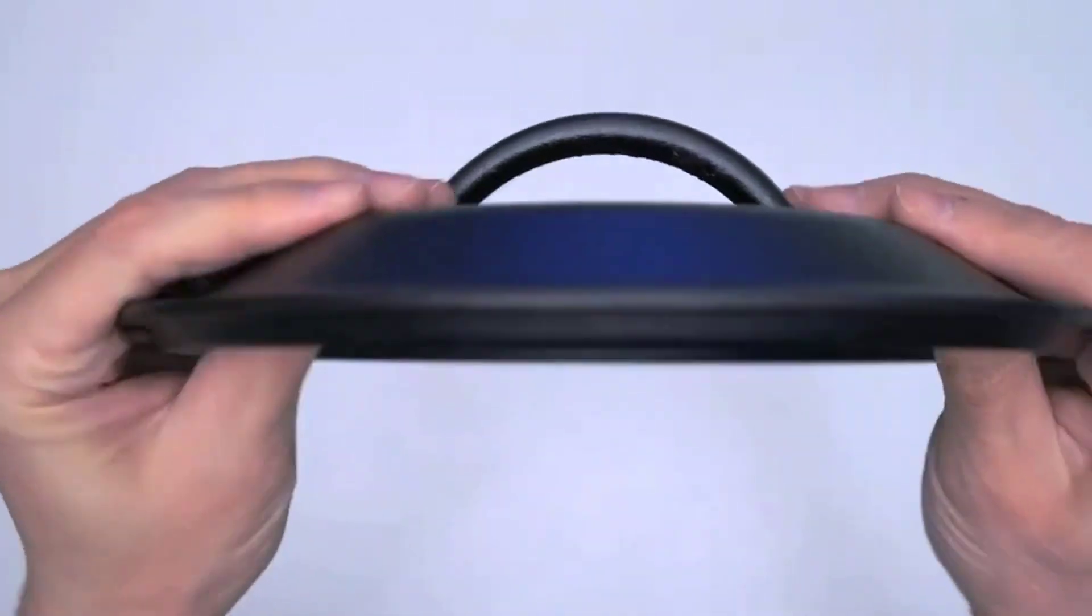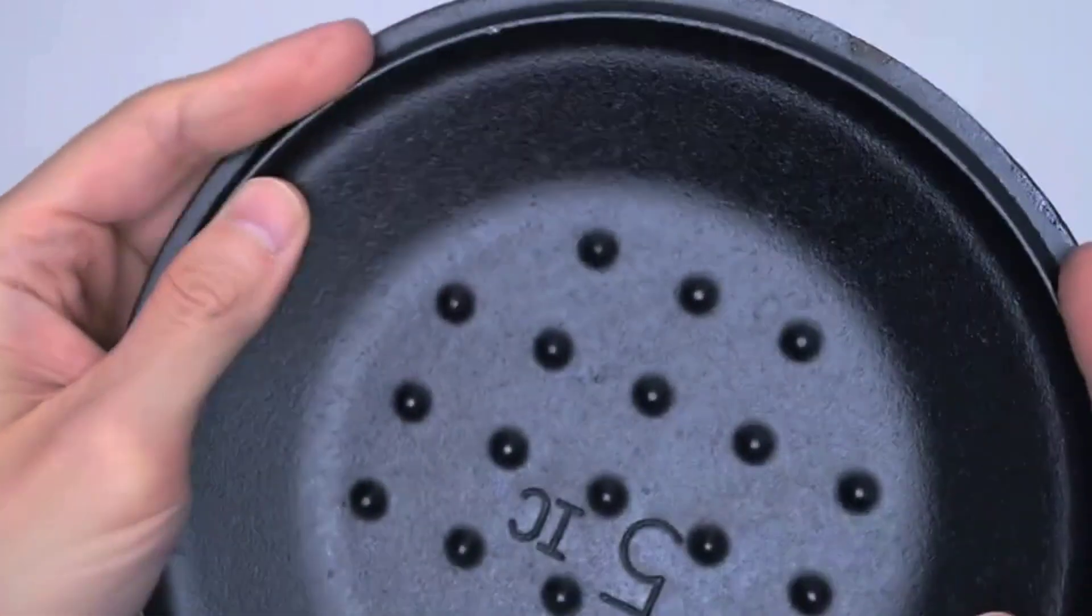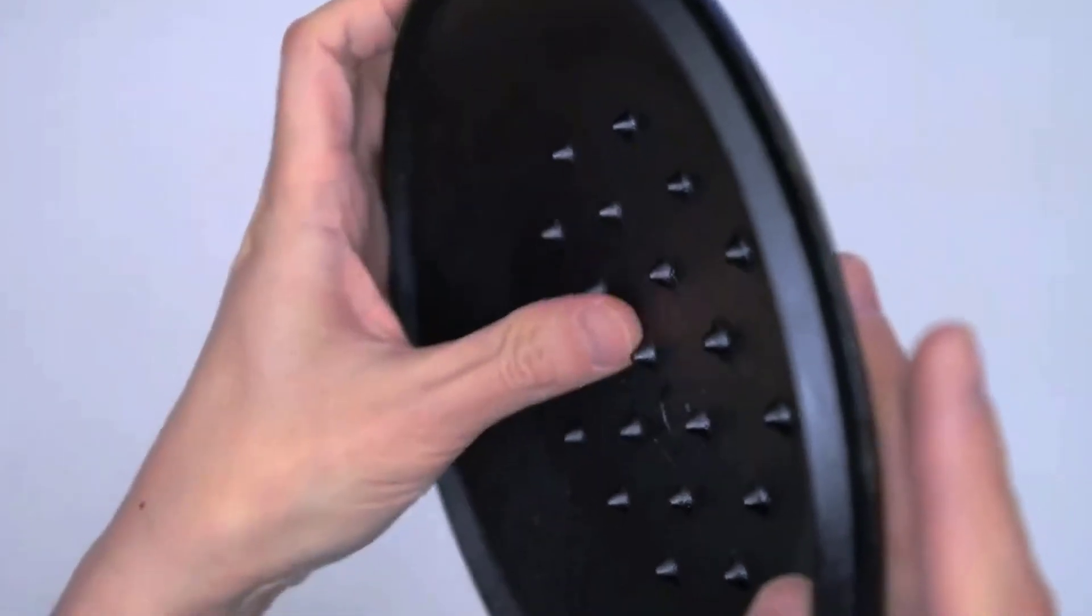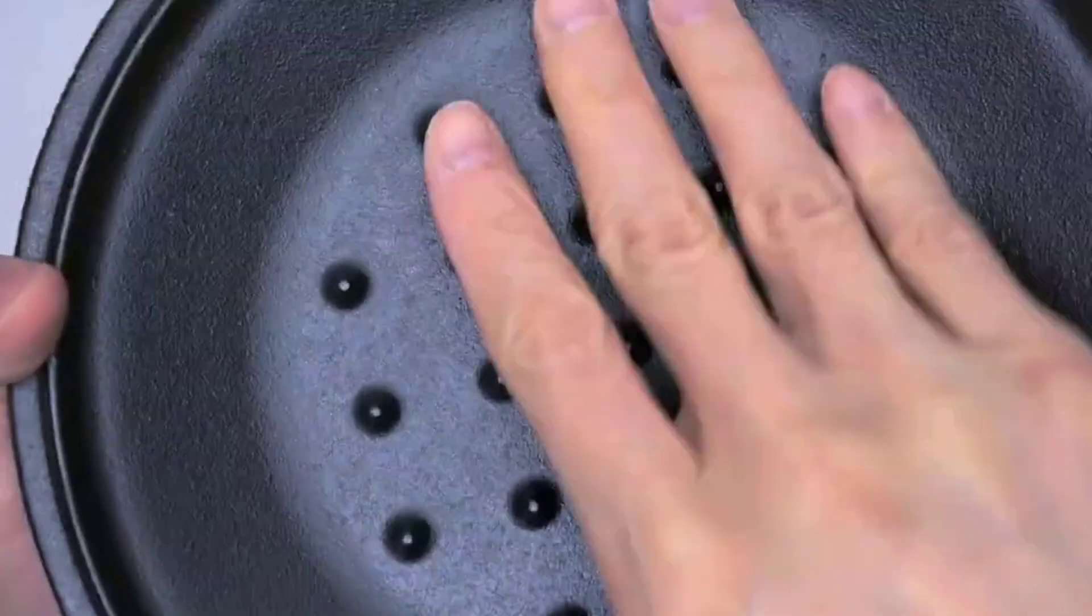The two-quart capacity is perfect for serving a small group or family. It's large enough to hold a generous amount of food, but not too big that it takes up excessive space on the table.